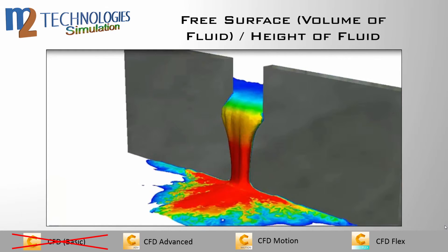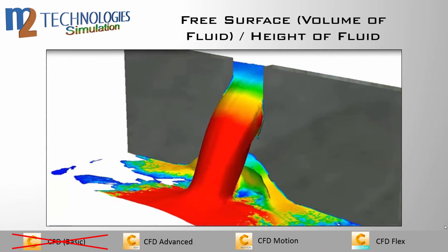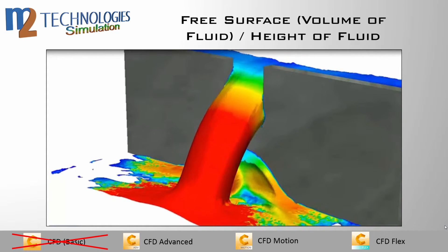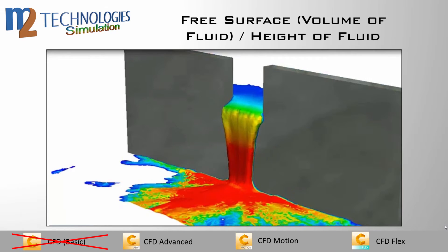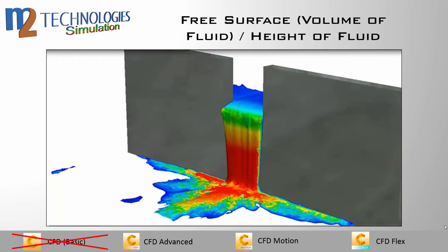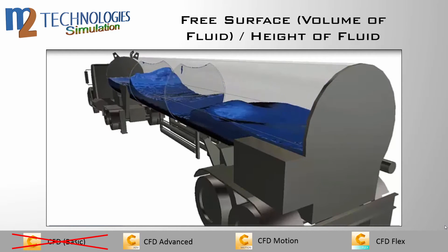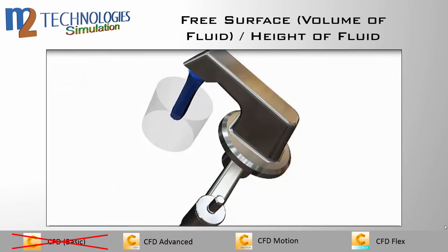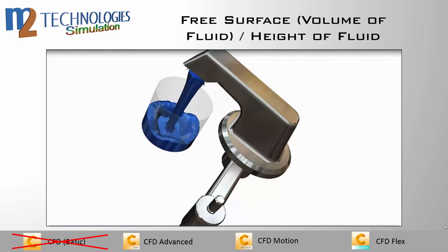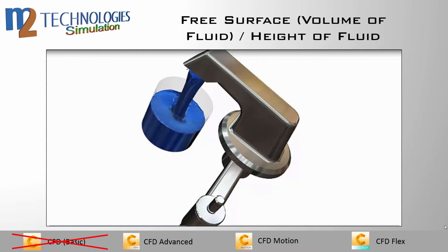With the free surface modeling capability, you can dynamically simulate the interface between liquids and solids. This ability is essential for modeling flow phenomena such as waves, sloshing, and spilling — flows that occur in nature as well as in a wide range of engineering applications. I'll just let this video play out, because this stuff looks really cool.